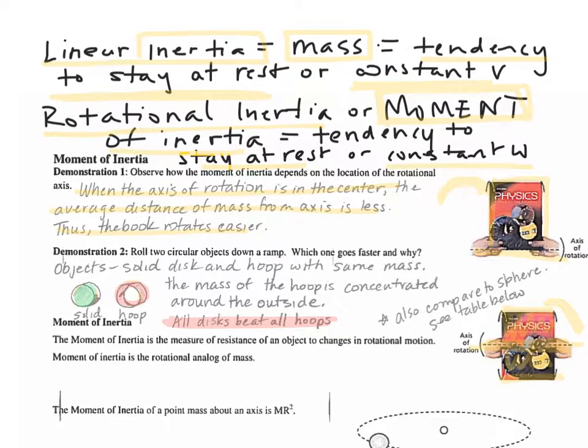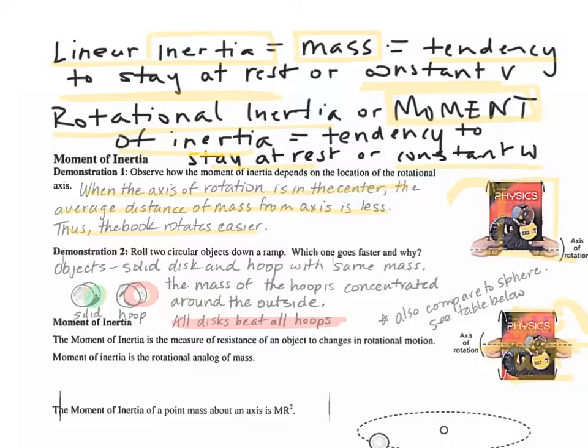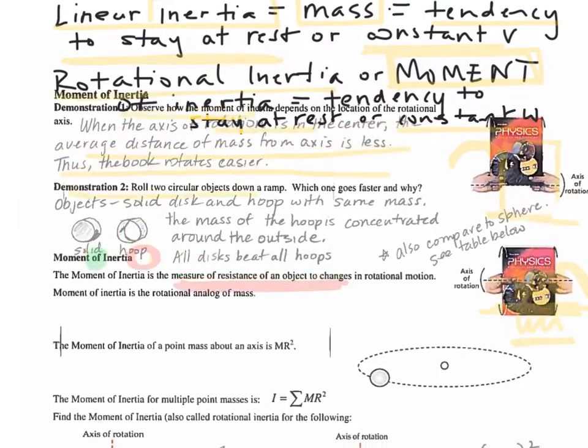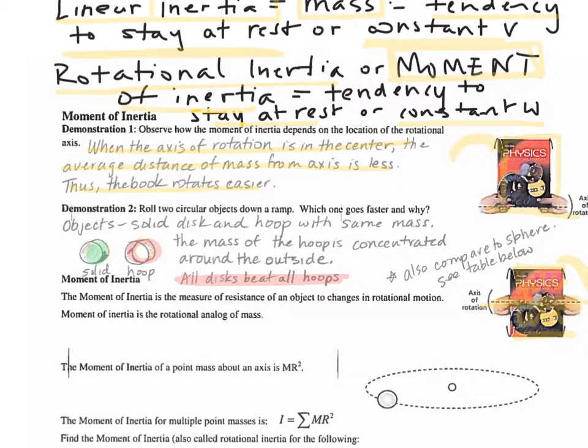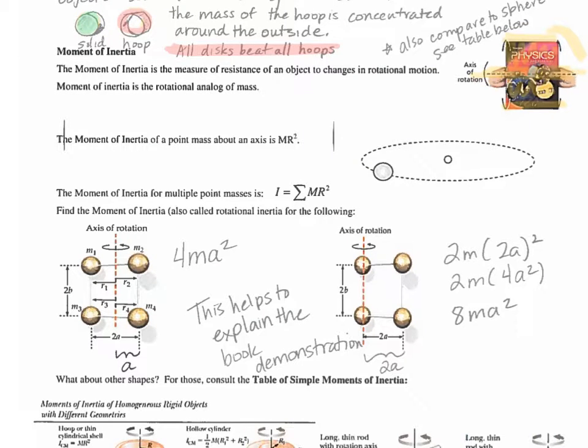We're going to do some calculations to prove this physically. Let's define moment of inertia. The moment of inertia is the measure of resistance of an object to changes in rotational motion. If it's at rest, it's going to want to stay at rest, and if it's already rotating, it wants to keep rotating. It's going to take a torque to stop it. Moment of inertia is the rotational analog of mass.